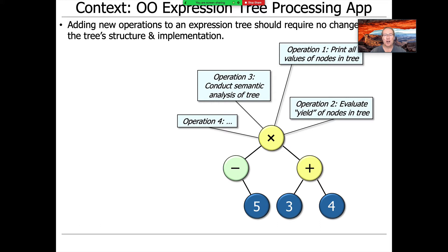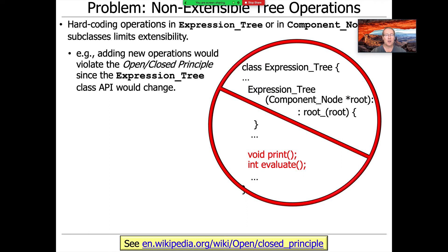Concretely, you might have operations like printing all the values of the nodes in the tree, evaluating the yield of the nodes, conducting semantic analysis, doing code generation or optimization. There are all these different things you might want to do on the tree structure, and we want a design that's open-ended to allow those kinds of enhancements without having to go back and modify the internals or the API of the expression tree itself.